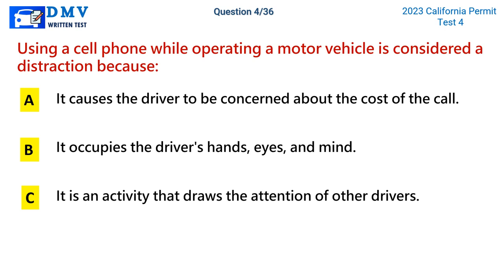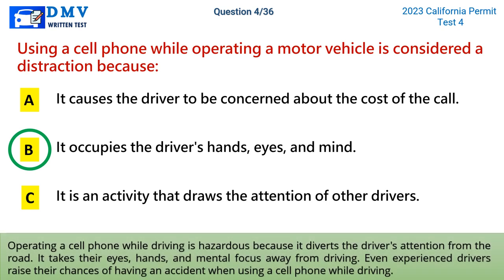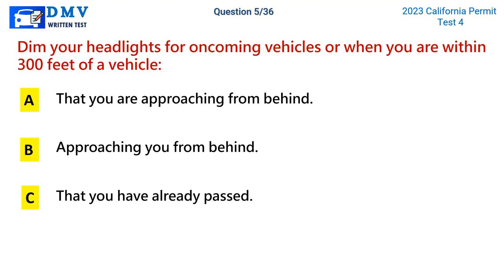Question 4: Using a cell phone while operating a motor vehicle is considered a distraction because. A) it causes the driver to be concerned about the cost of the call, B) it occupies the driver's hands, eyes, and mind, C) it is an activity that draws the attention of other drivers. The correct answer is B. Operating a cell phone while driving is hazardous because it diverts the driver's attention from the road, taking their eyes, hands, and mental focus away. Even experienced drivers raise their chances of having an accident when using a cell phone while driving.